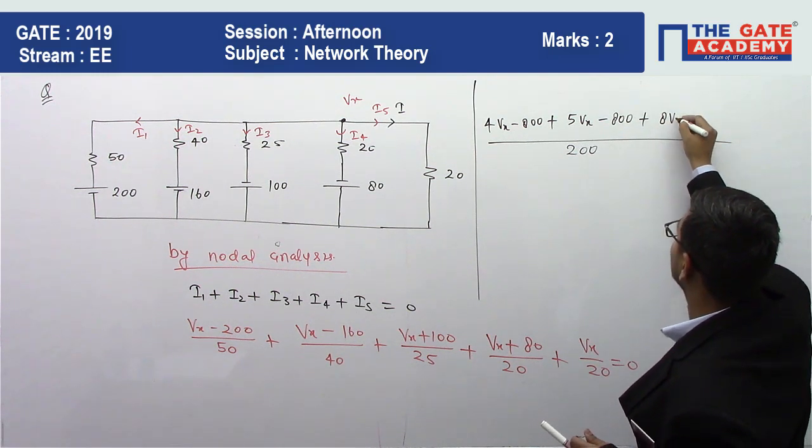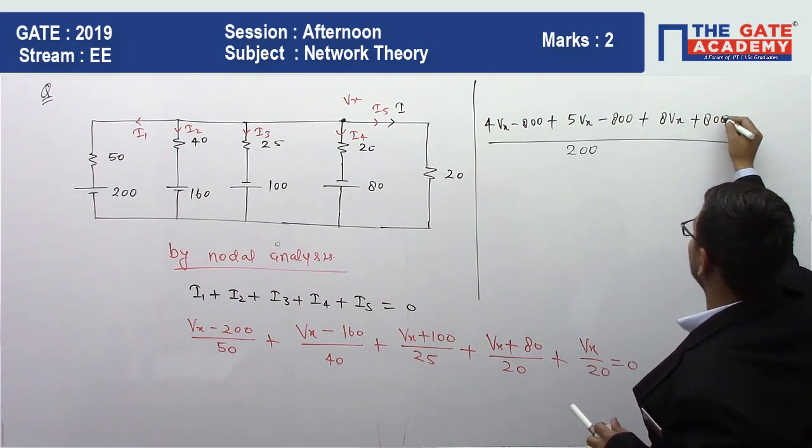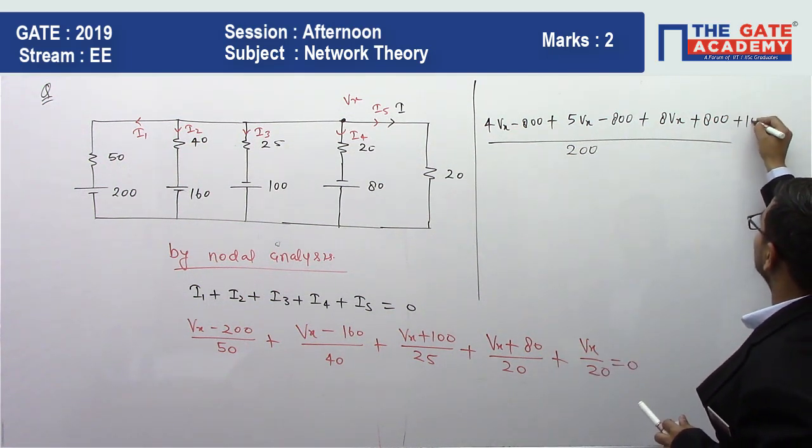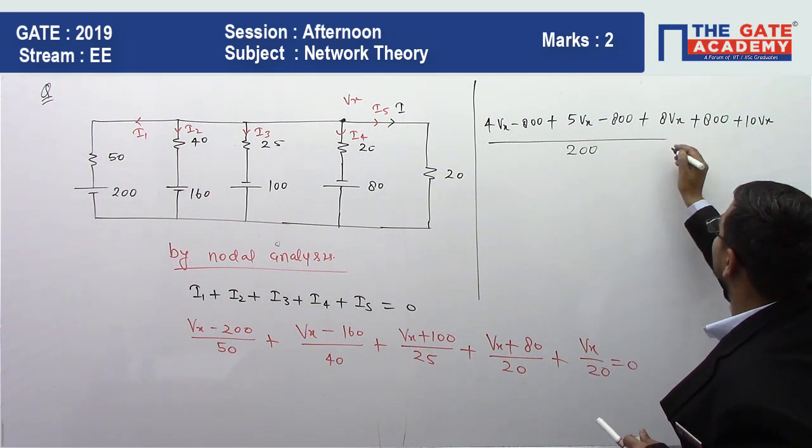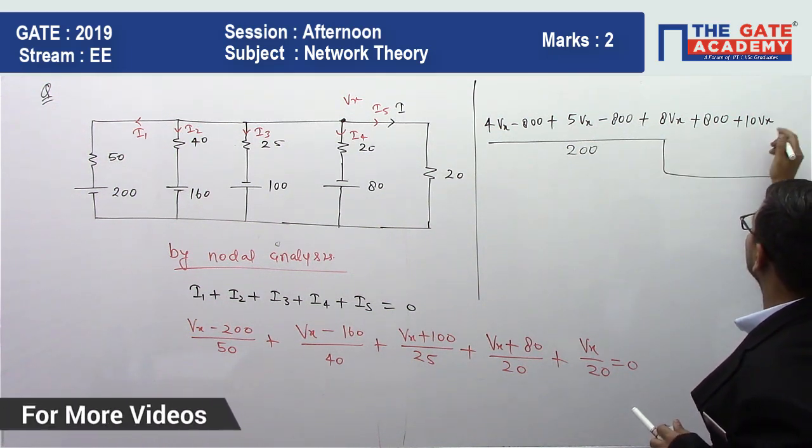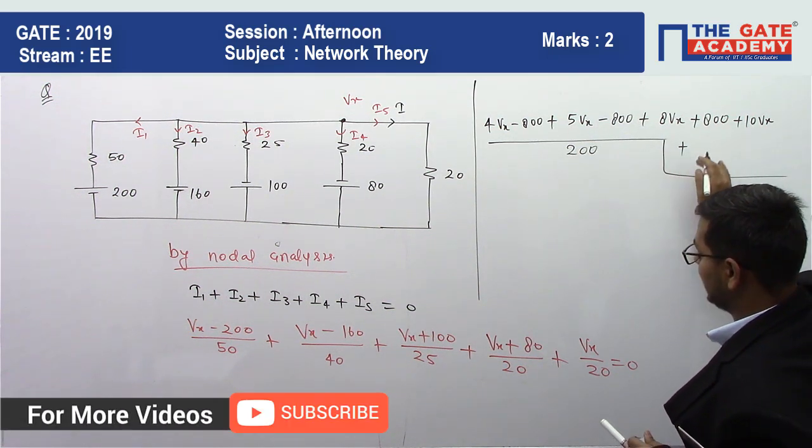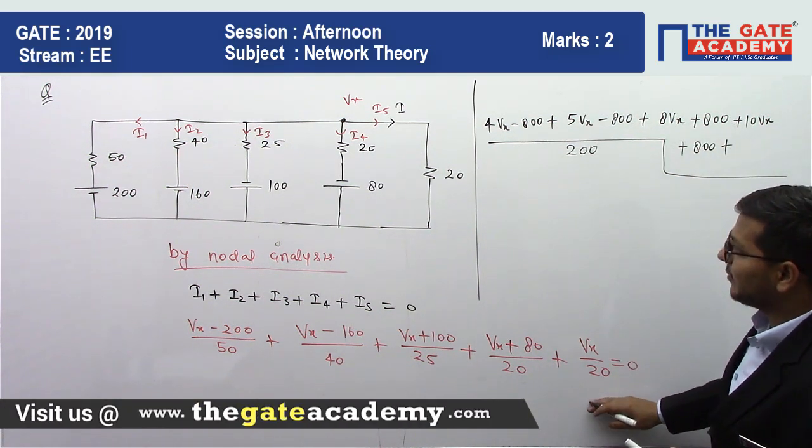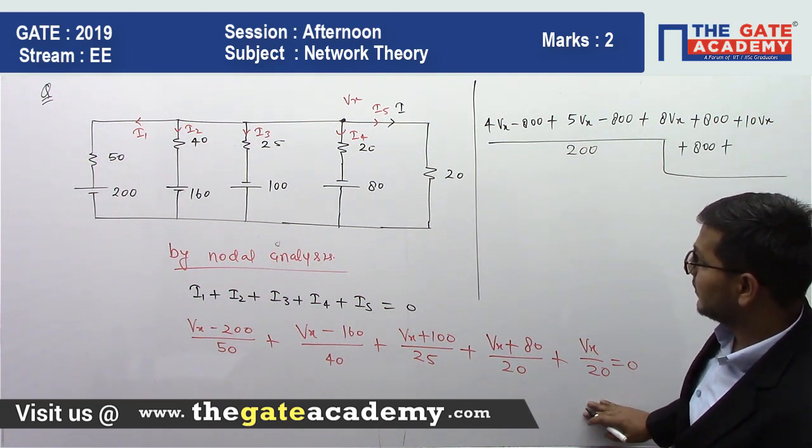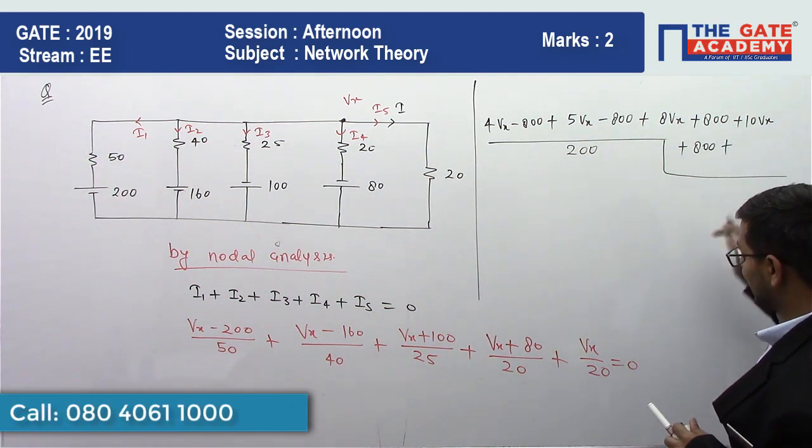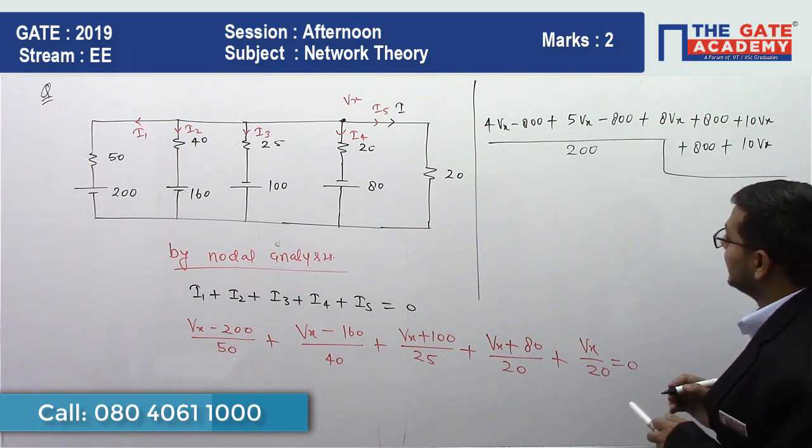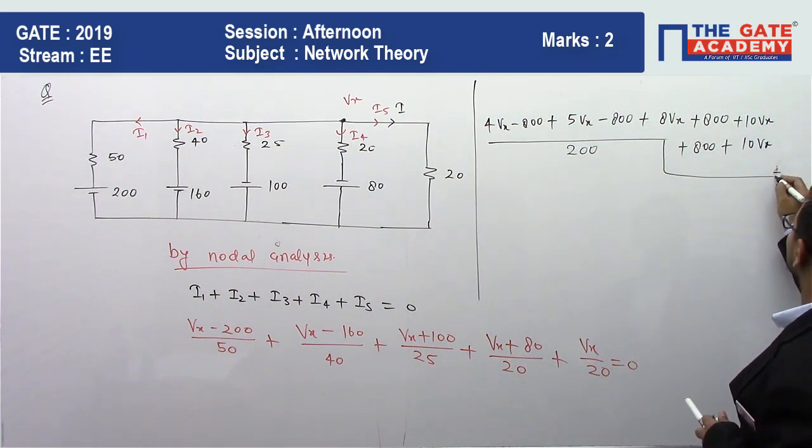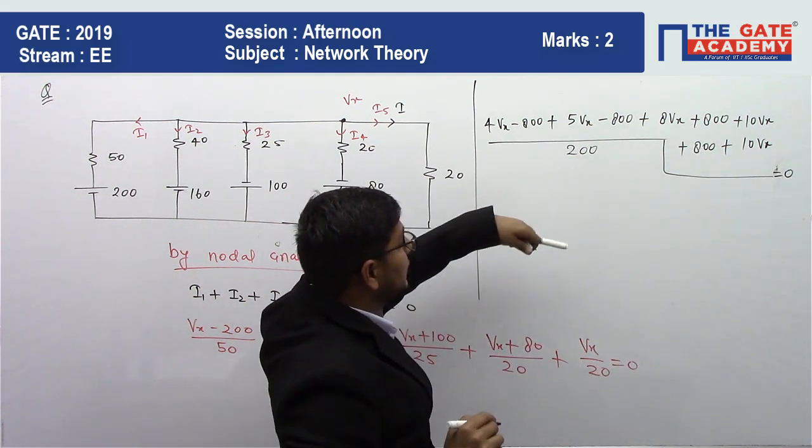Here we can get 8Vx plus 800, and here we can get 10Vx plus 800. Plus here we can get, after dividing by 20, we can get 10Vx again. Equal to 0. Now I am going to solve this equation.